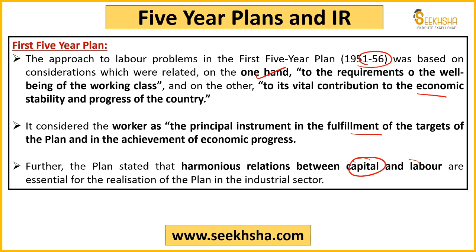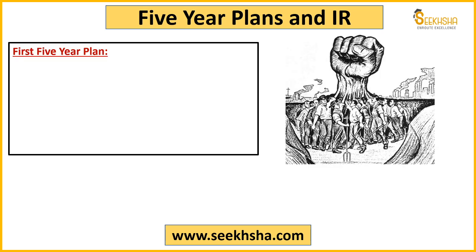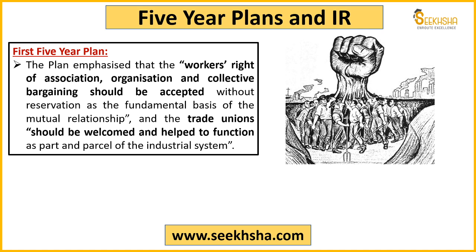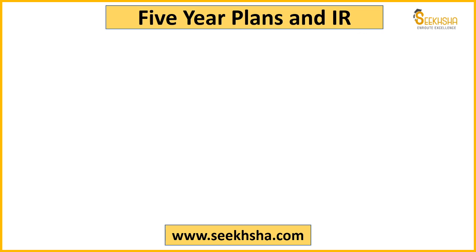First Five Year Plan ने यह भी बोला कि capital और labor के बीच में जो relation है वो harmonious होना चाहिए — employer और employee का relation harmonious होना चाहिए। साथ ही worker को यह अधिकार होना चाहिए कि वो association बना सके, collective bargaining use कर सके। Trade union system को First Five Year Plan ने support किया — employers को trade unions को welcome करना चाहिए और उन्हें industrial system में function करने देना चाहिए।